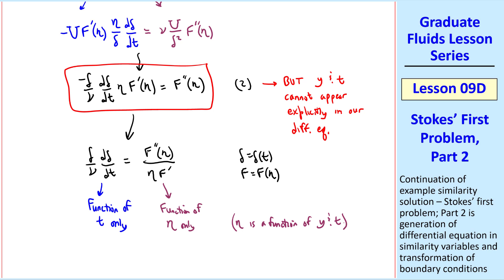So imagine a scenario where we keep t fixed, but we change y. Changing y changes eta, and therefore changes the right side. But since the left side does not depend on y, it would not change the left side.